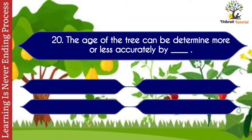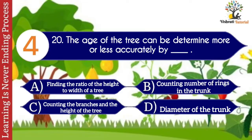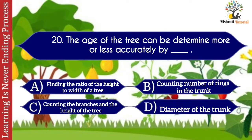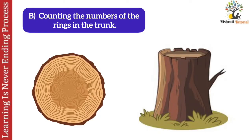Question number twenty: the age of a tree can be determined more or less accurately by dash. Options: A. Finding the ratio of height to width of a tree, B. Counting the number of rings in the trunk, C. Counting the branches and height of the tree, D. The diameter of the trunk. The correct answer is B. Counting the number of rings in the trunk. The age of a tree can be determined by counting the rings in the trunk.